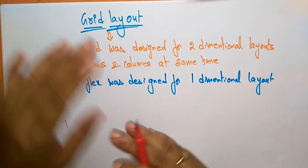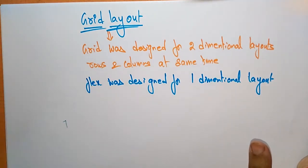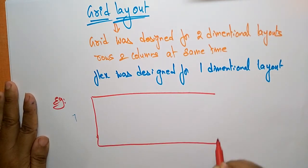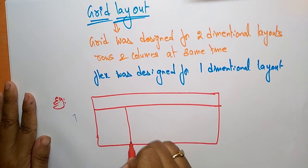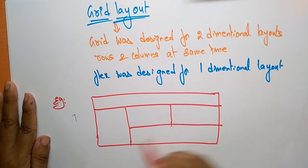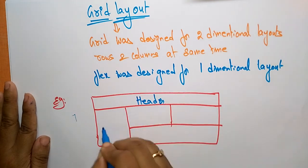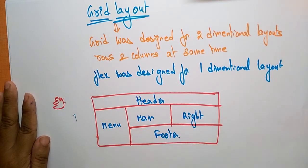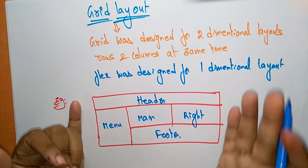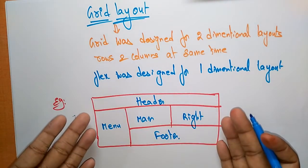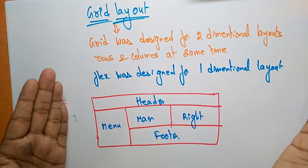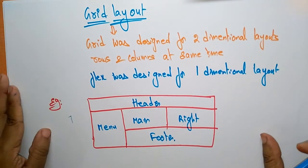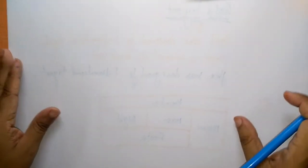With the help of the grid layout you can divide the page into modules. Let me show you that. So let's take this is a web page which consists of divided into modules — this is a header, this is the menu, main, right, and footer. This is a grid layout. It's a two-dimensional layout because the page is divided into rows and columns at the same time. These are the rows and here you have seen the columns.